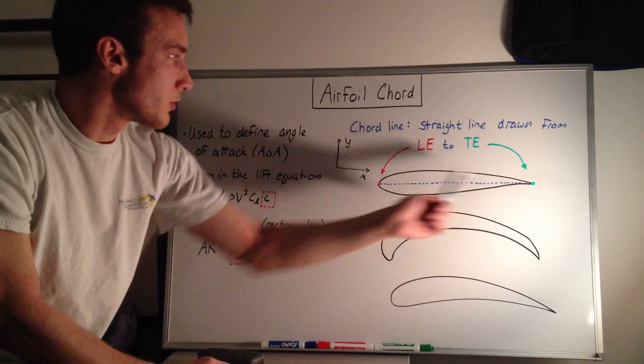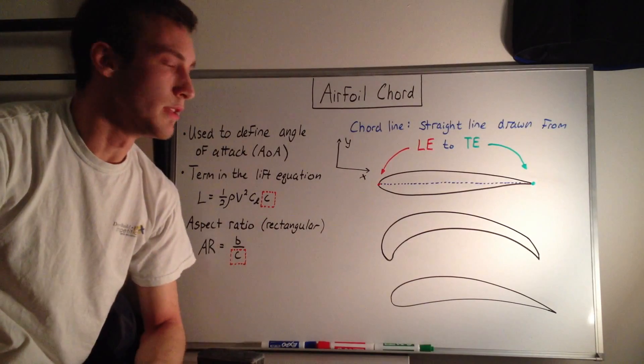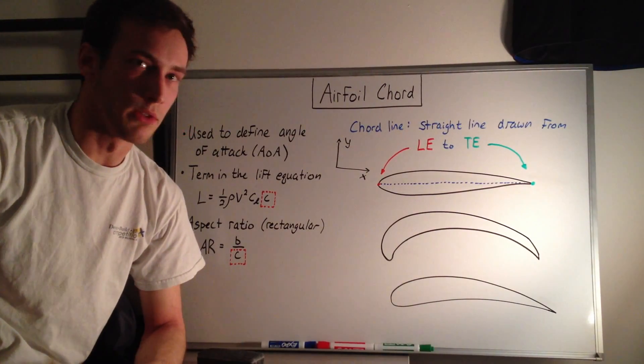And then from the leading edge to the trailing edge, we draw this straight line, which is this blue line, and that is the cord line, where we can reference the angle of attack off of.